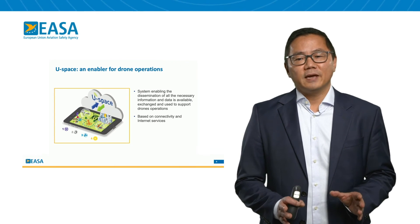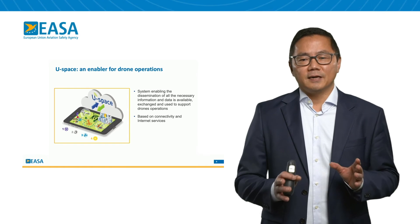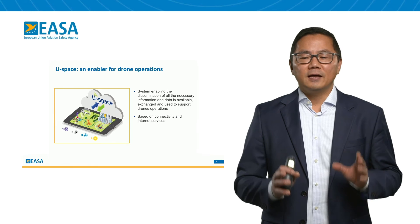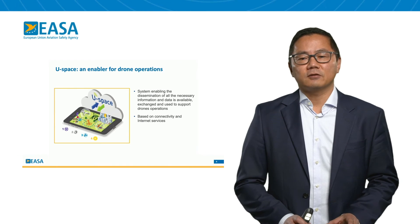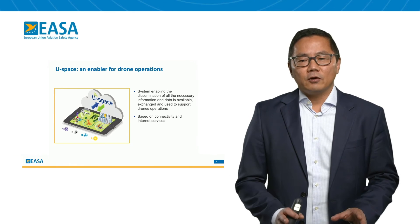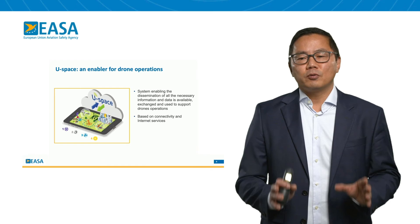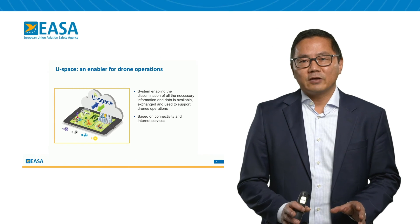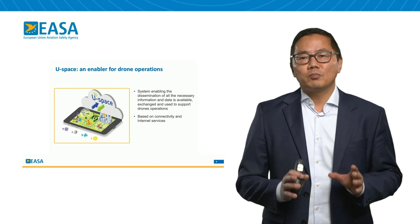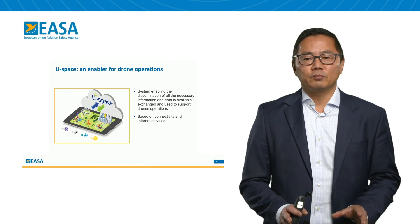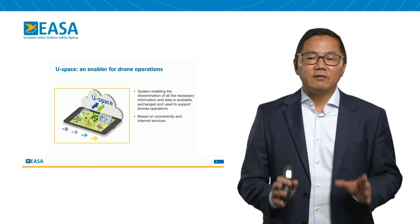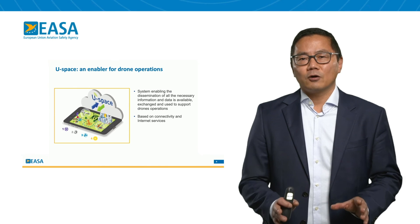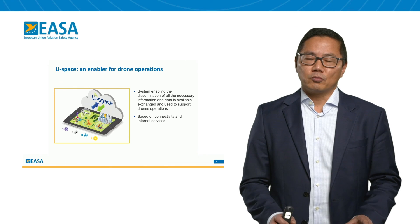In summary, U-Space puts in place a system to support drone operations by ensuring that all the necessary information can be shared and used among the aviation actors. All the air-risk mitigation means proposed will be facilitated by the rapid development of technology, which is a crucial part of the success of U-Space. U-Space will therefore contribute to the safety of operations in the area where drones are authorized to operate.